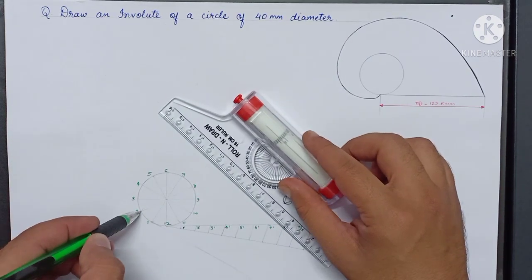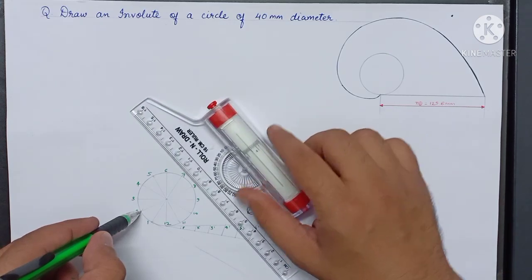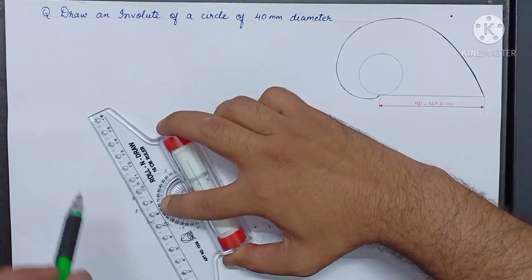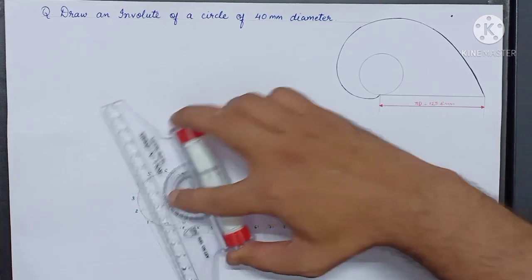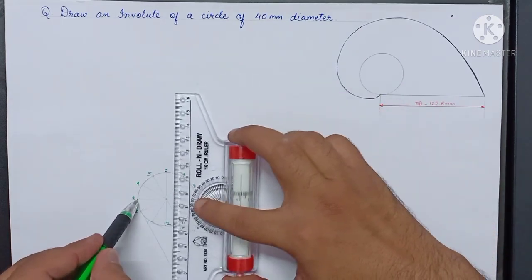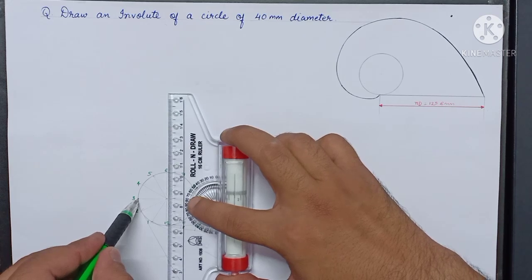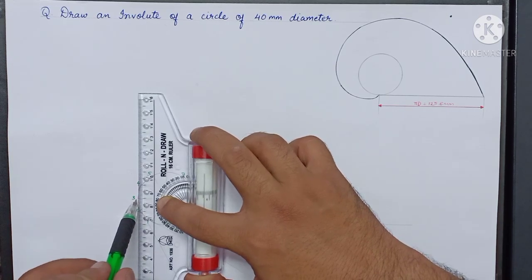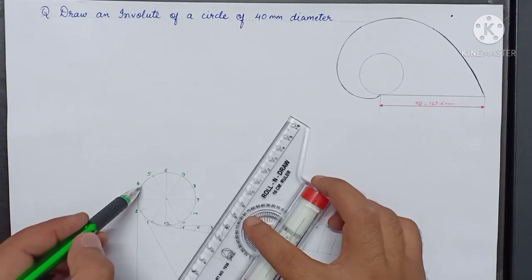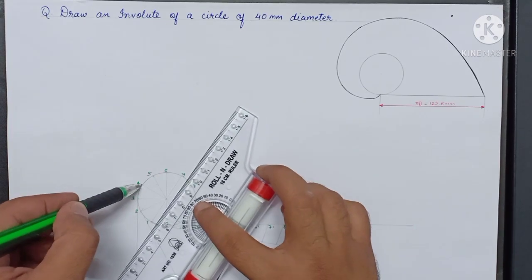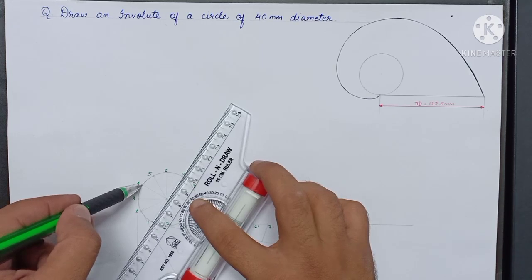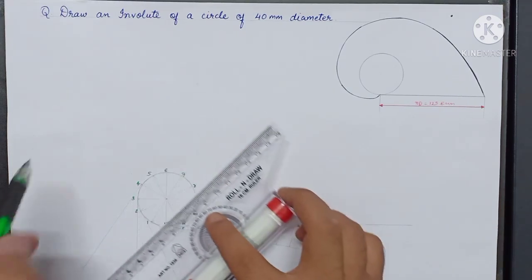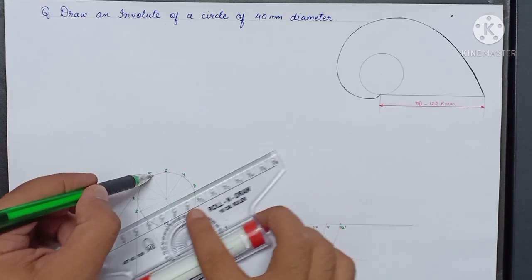Similarly, for point number two, match the roller scale to the line connecting 5 and 11 and slide it until it reaches point number two and draw a tangent. For point number three, match the roller scale to the line connecting 6 and 12, slide it to point number three and draw a tangent. For point number four, use the line connecting 7 and 1. Then continue for point number five and so on.